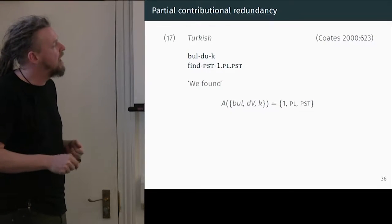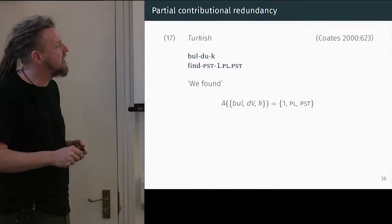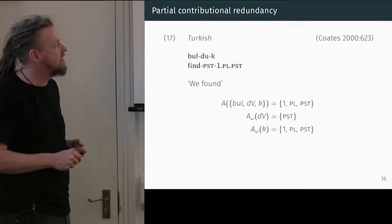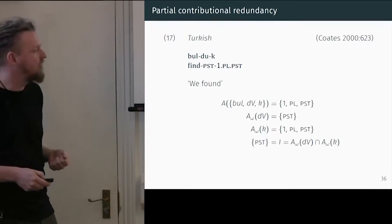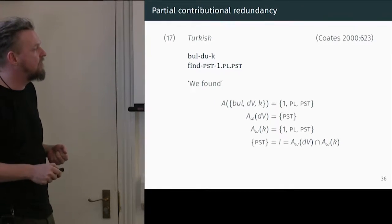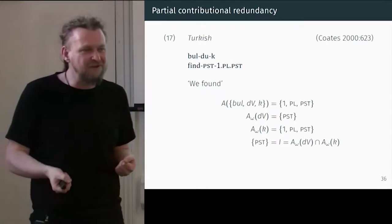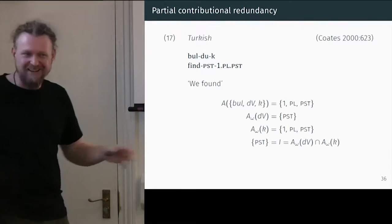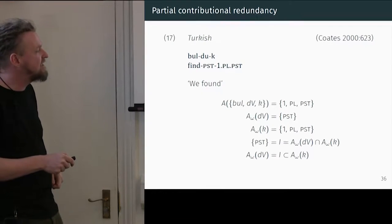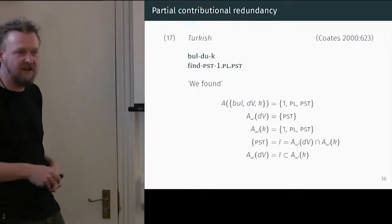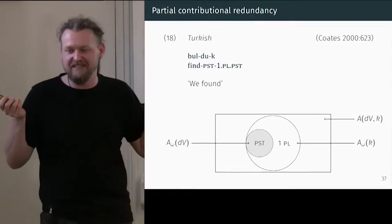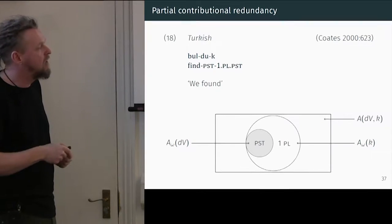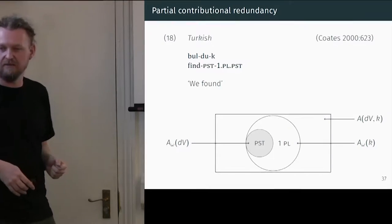Back to our Turkish example. We take the two suffixes: 'du' and 'k.' The 'du' suffix is associated with just the value {past}, whilst 'k' is {first plural, past}. Past is the intersection of these two sets of features. So this is multiple exponents of past tense, per our definition. Not only that, but past tense is a subset of the set {first plural, past} — this is how we know this is partial contributional redundancy. We can just map it out: here's our word, two formatives, write the feature values, and they exist in this Venn subset relation.